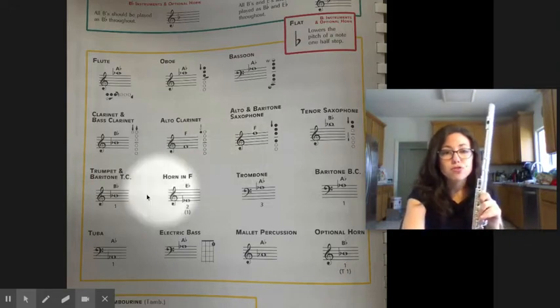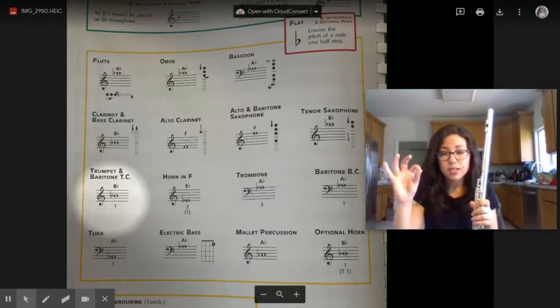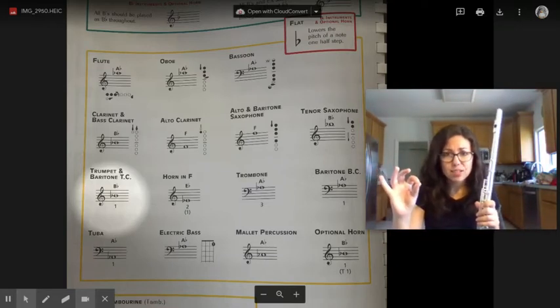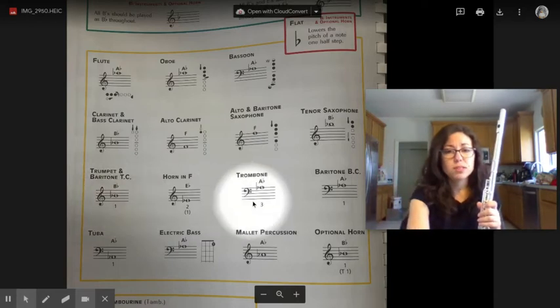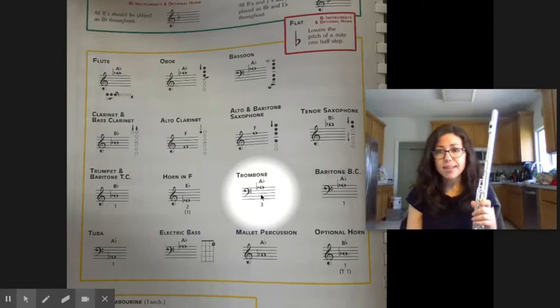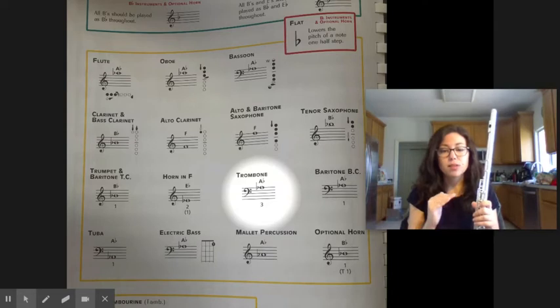Trumpets, your new note is also a B-flat. As it shows you right there, it's a one, your first finger. So it's like F, but you buzz even faster to make the note higher. And trombones, your new note is an A-flat, just like the flutes, and it is in third position—just like your E-flat where your hand can touch the bell. But again, just like trumpet, you have to buzz faster.